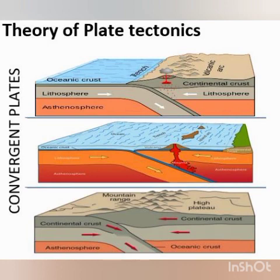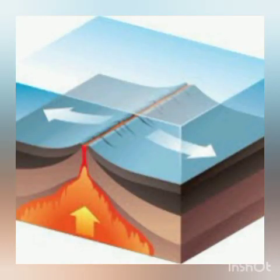One such plausible theory is the Theory of Plate Tectonics. According to this theory, the crust — that is, the upper part of the earth — has been formed out of seven major and seven minor plates. The movement of these plates results in the building up of stresses within the plates and the continental rocks above, leading to folding, faulting, and volcanic activity.